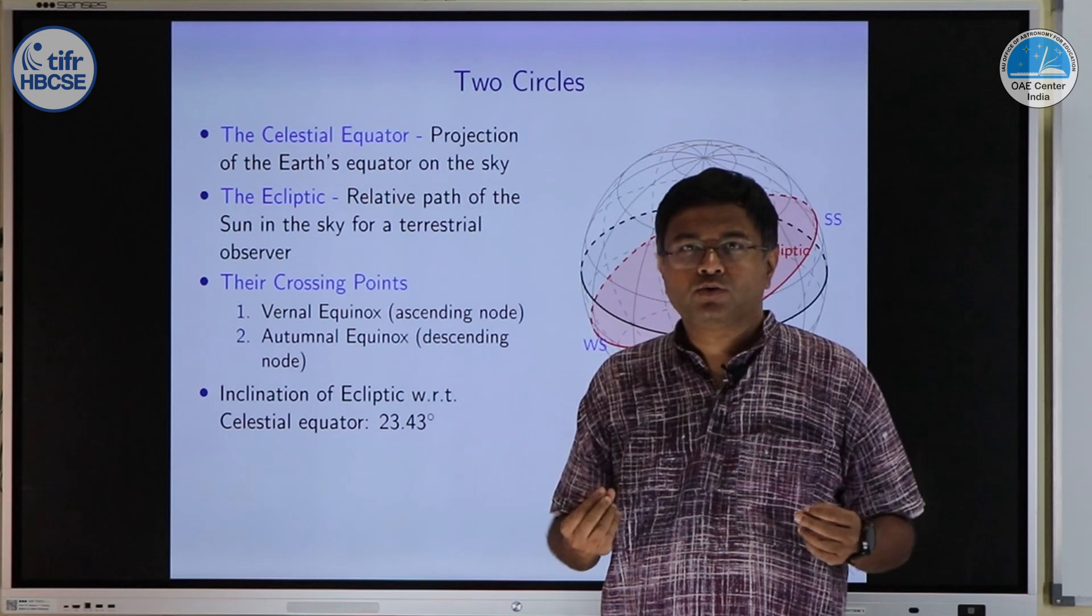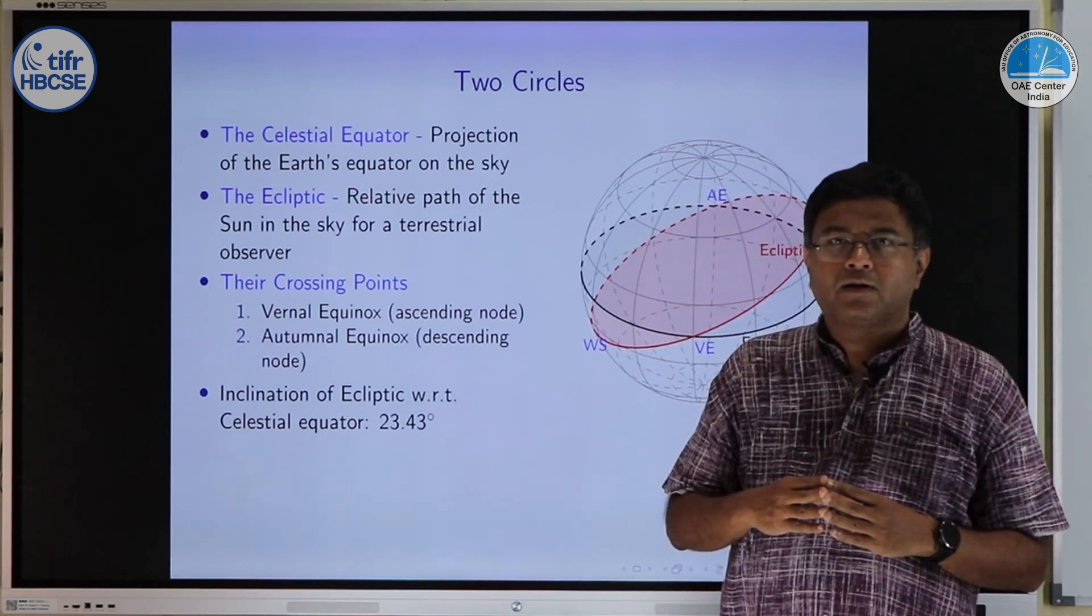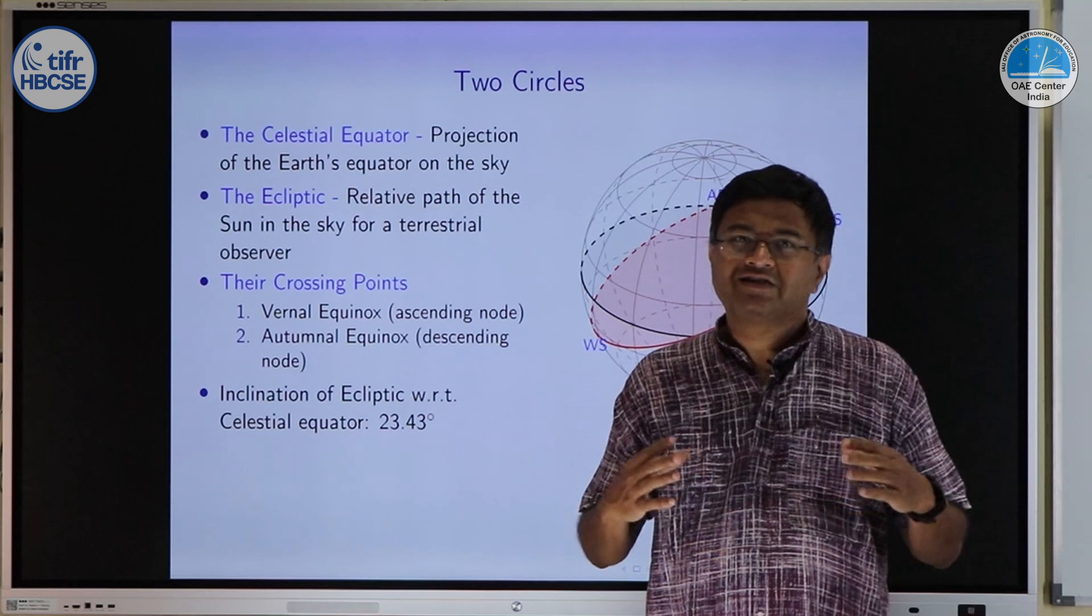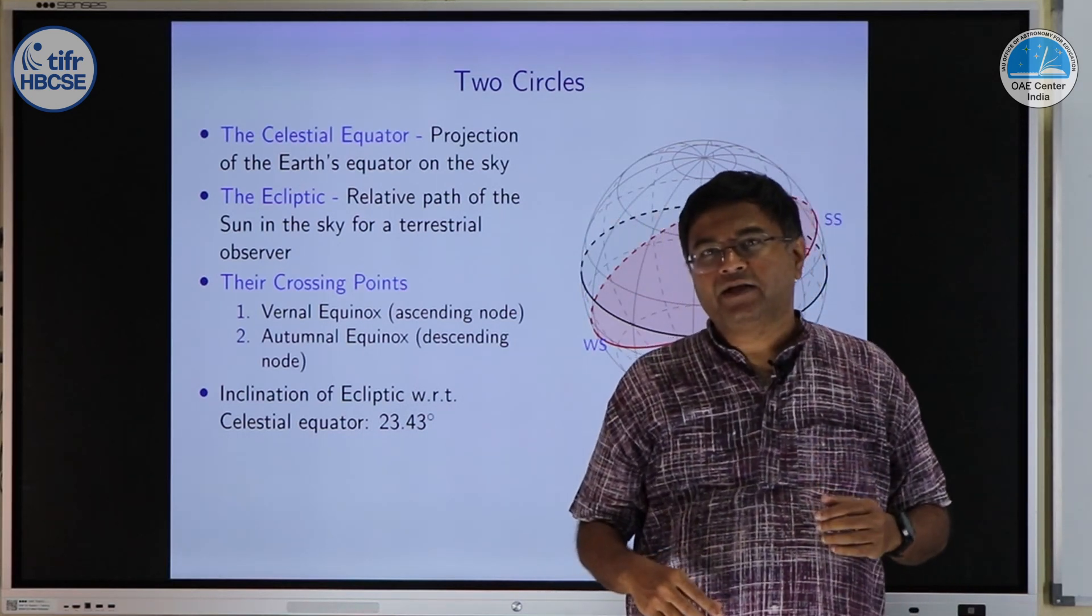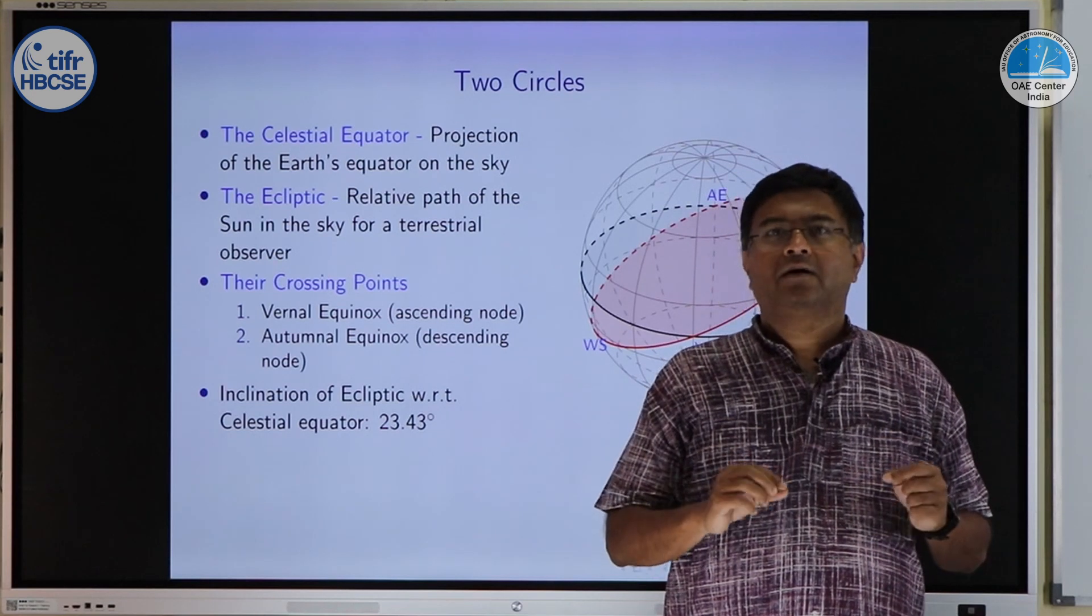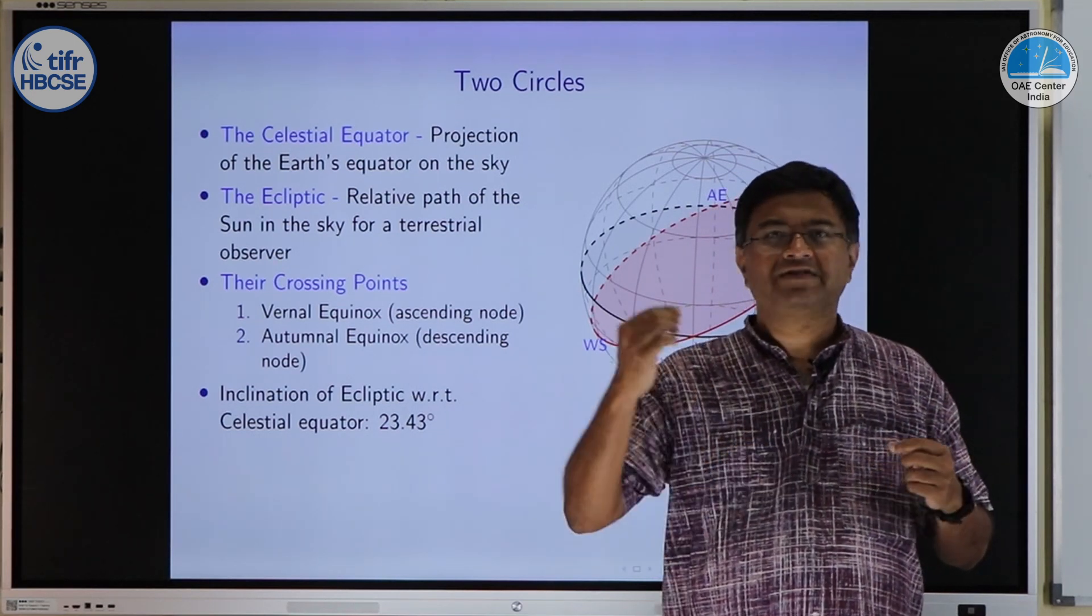As you already know, celestial equator is projection of earth equator on the celestial sphere. And ecliptic is the apparent path of sun as we see from earth.